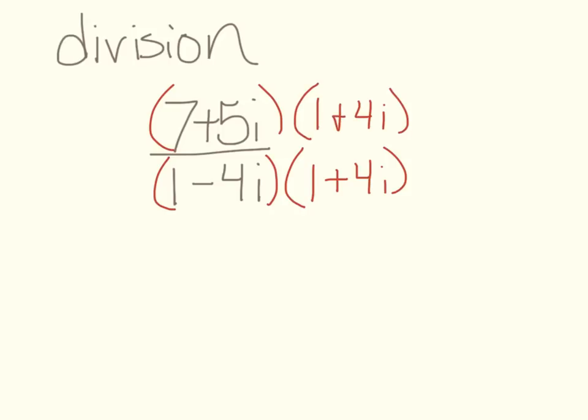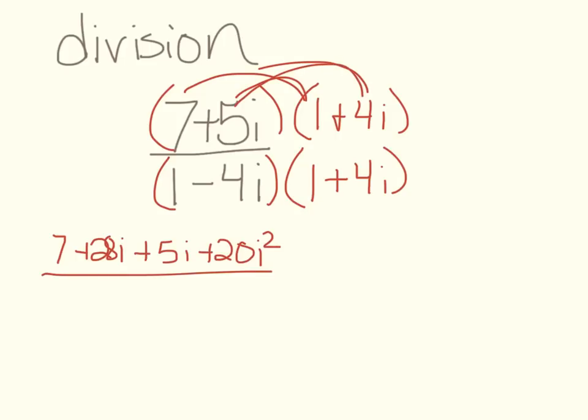And I'm going to do that to the top and the bottom. And now we have to FOIL the top and the bottom. So we've got 7 plus 28i, plus 5i, plus 20i squared, all over. And then I have 1 plus 4i, minus 4i, and minus 16i squared.